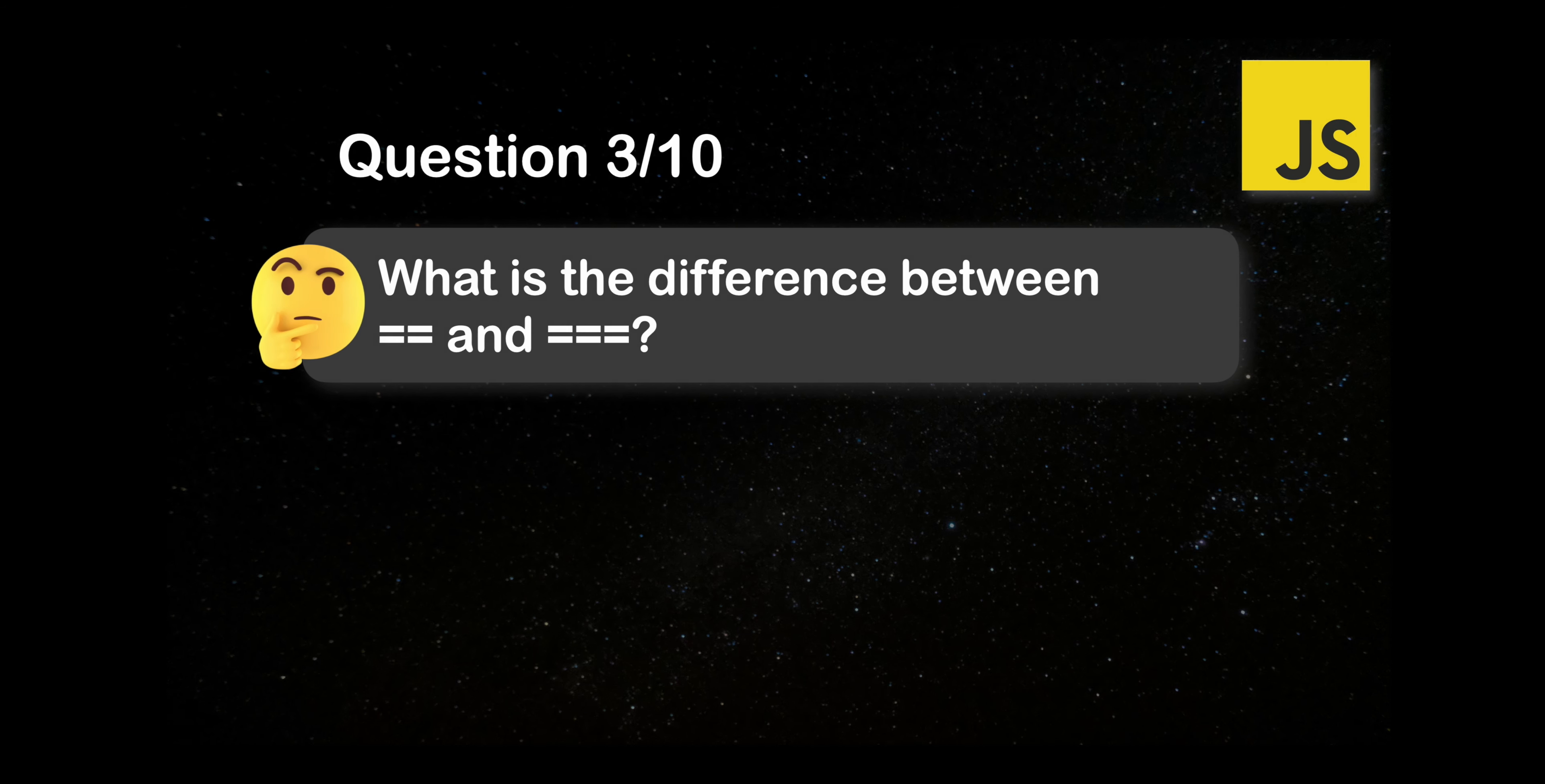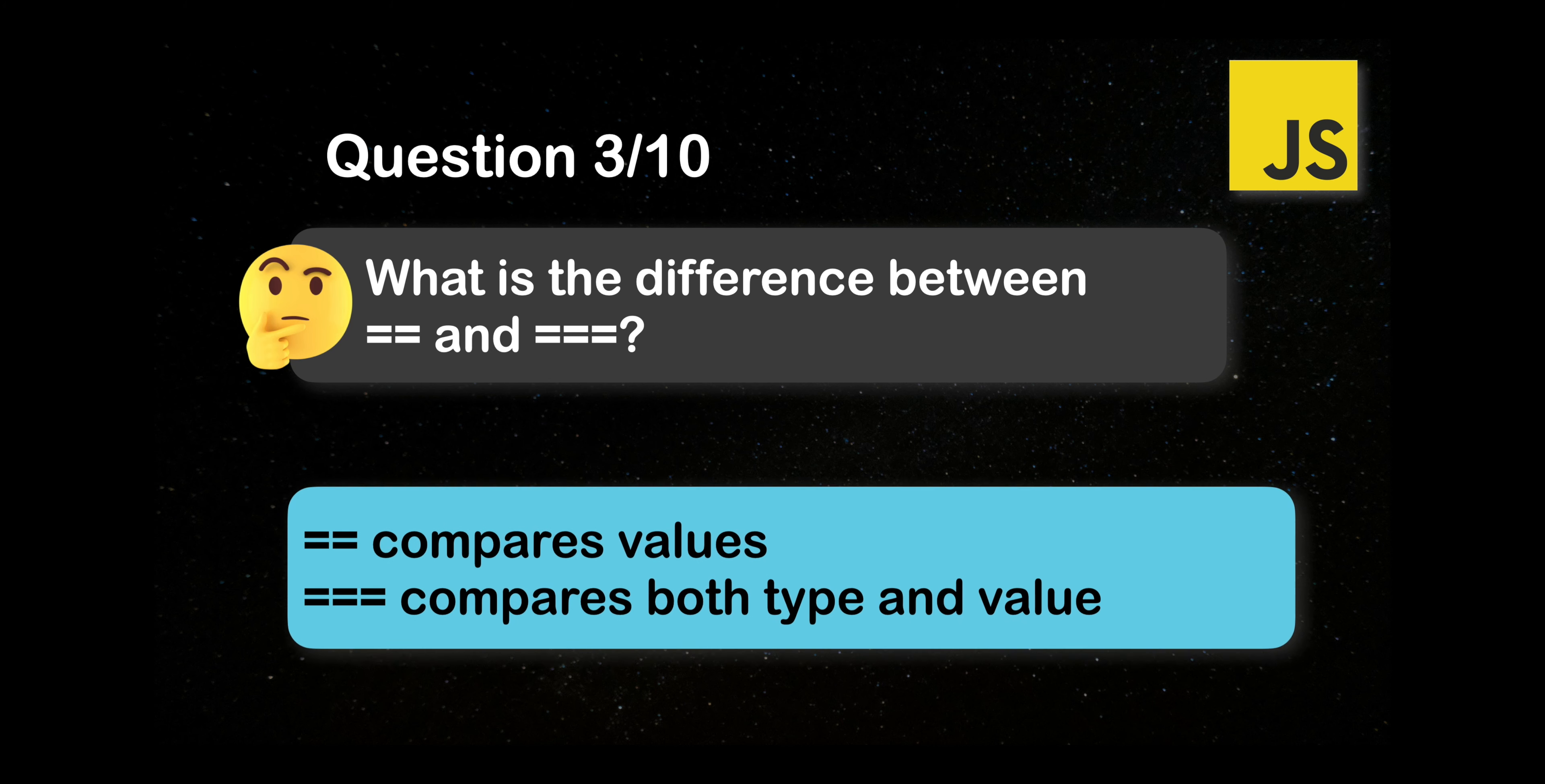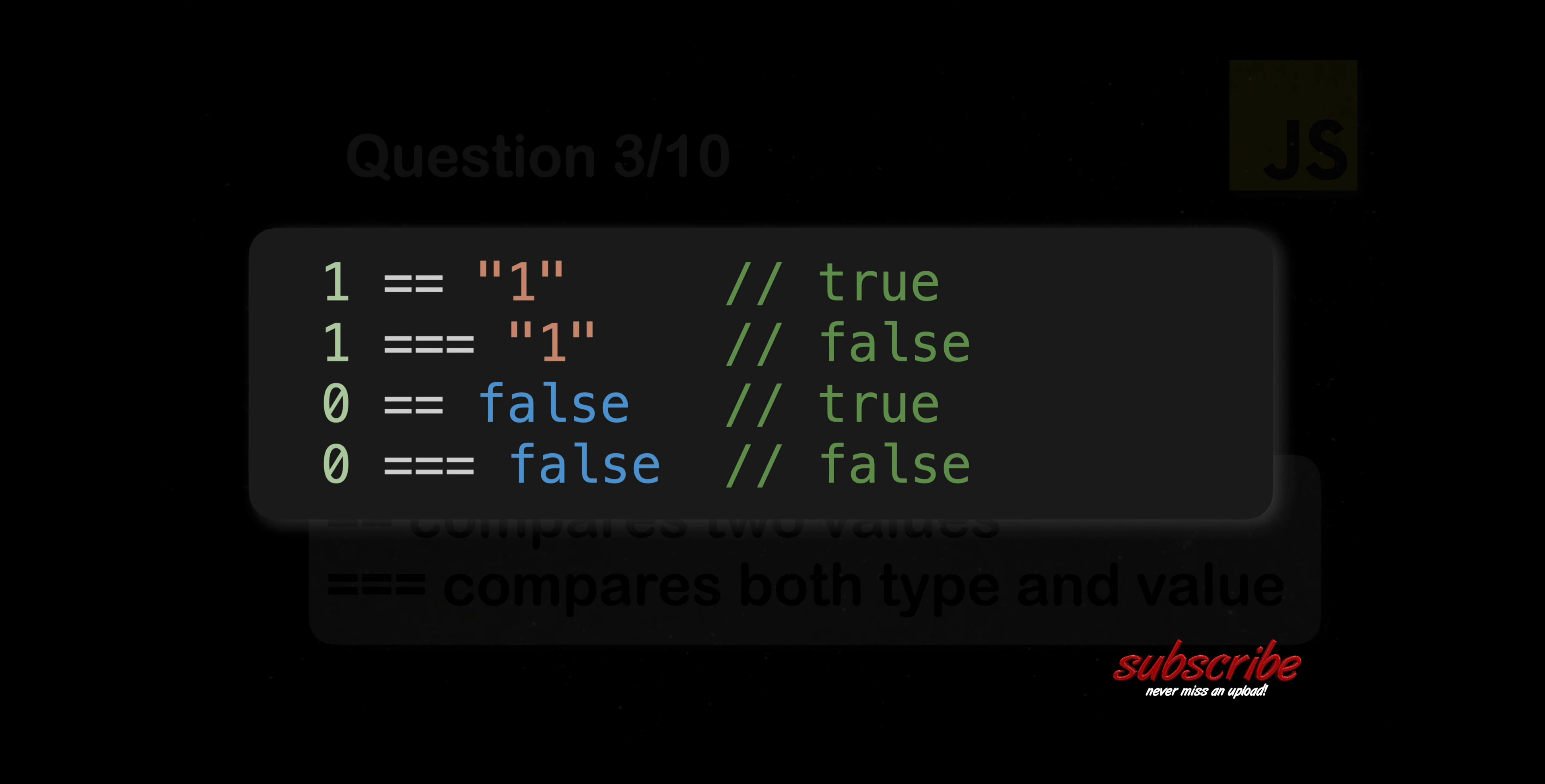Next question. What is the difference between double equals and triple equals? Double equals compares two values. Triple equals compares both values and the types. It is highly recommended to use triple equals when checking for equalities.